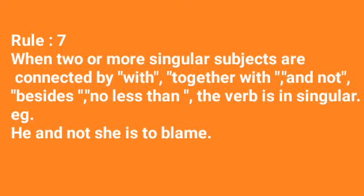Rule 7: When two or more subjects are connected by 'with', 'together with', 'and not', 'besides', or 'no less than', the verb is in singular. Example: 'He and not she is to blame.'